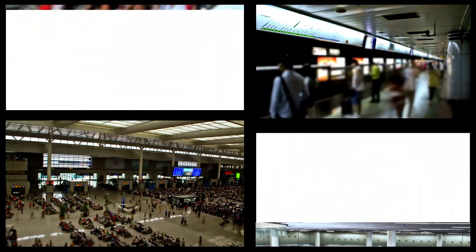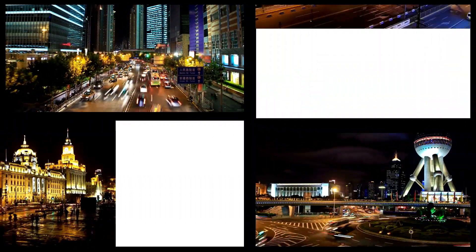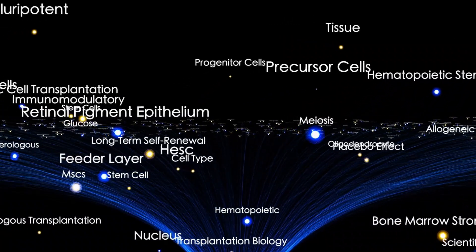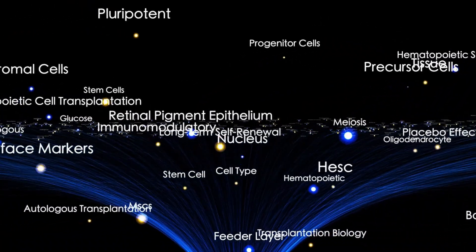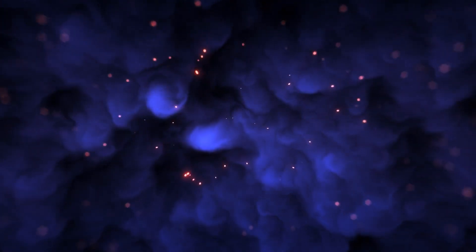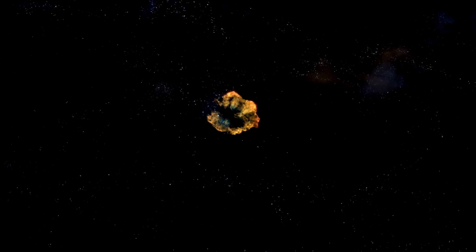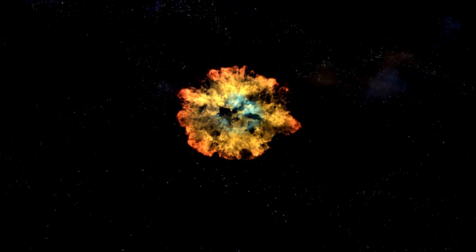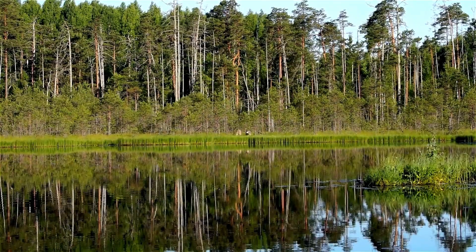Jupiter, often called the solar system's vacuum cleaner, is a dominant force in this region. Its immense mass accounts for nearly three-quarters of all the matter in the solar system outside the sun, giving it a gravitational influence that shapes the fate of nearby objects. A striking example of this occurred in 1994, when the comet Shoemaker-Levy 9 ventured too close to Jupiter.